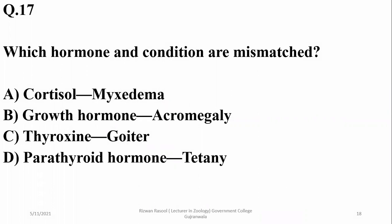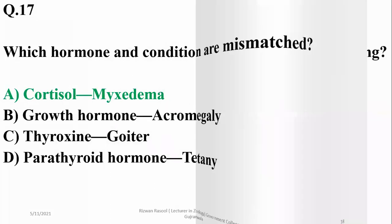Growth hormone is related to acromegaly, thyroxine to goiter, and parathyroid hormone underactivity can be related to tetany or low blood calcium level. So the mismatch is cortisol-myxedema, and A is the right option.